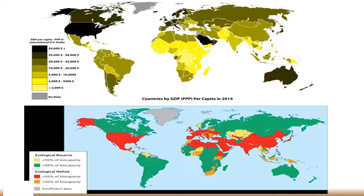Interestingly enough, Saudi Arabia is also in this high income category with Oman directly next to it. Those countries may fall in this category based on oil production.